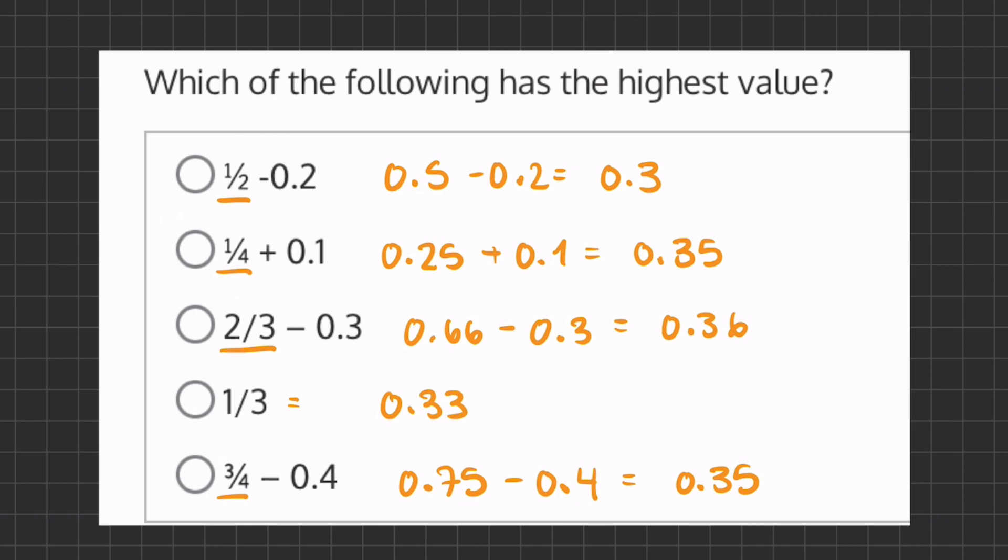Now, we have all of our answers in decimal form, and if we compare all of our final values, we can tell that 0.36 is our highest value. Therefore, 2 thirds minus 0.3 will be our highest value.